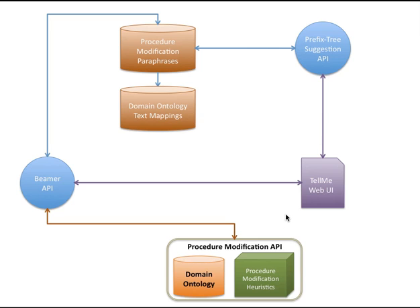The Suggestion API essentially suggests completions as a user types. The Beamer API returns high-level procedure modification tasks for a user instruction. Both of these APIs rely on a library of procedure modification paraphrases, which are essentially predefined templates of how a typical user would write instructions to modify a procedure. We also have a library of mappings of ontological terms, like steps, data types and properties in the domain ontology, to commonly used text.